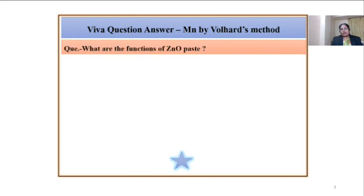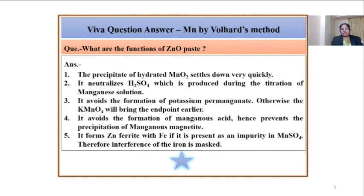Question: What are the functions of zinc oxide paste? The functions of zinc oxide paste are: the precipitate of hydrated MnO2 settles down very quickly; it neutralizes H2SO4 produced during the titration of manganese solution; it avoids the formation of potassium permanganate, otherwise KMnO4 will bring the endpoint earlier; it avoids the formation of manganese acid, hence prevents the precipitation of manganese manganate; and it forms zinc ferrite with iron if iron is present as an impurity in MnSO4, therefore removing the interference of iron.